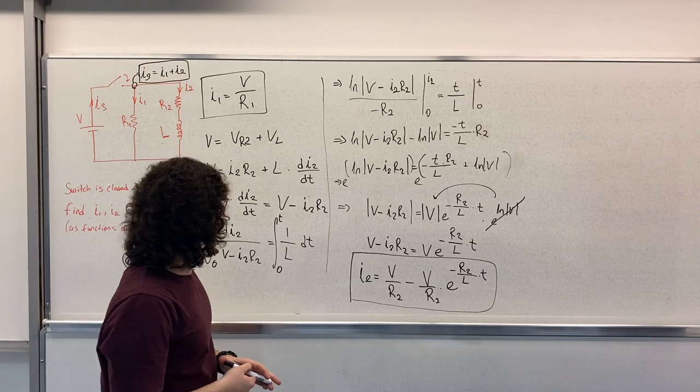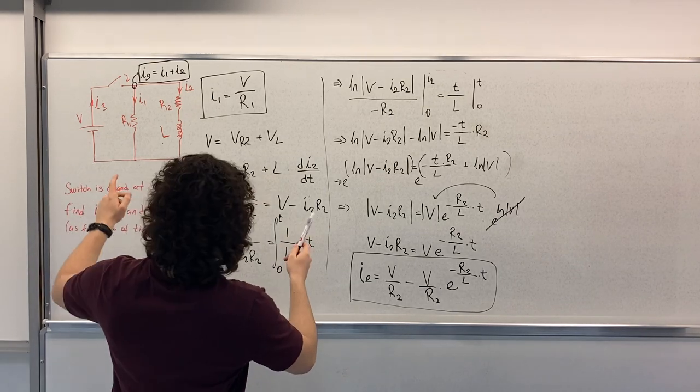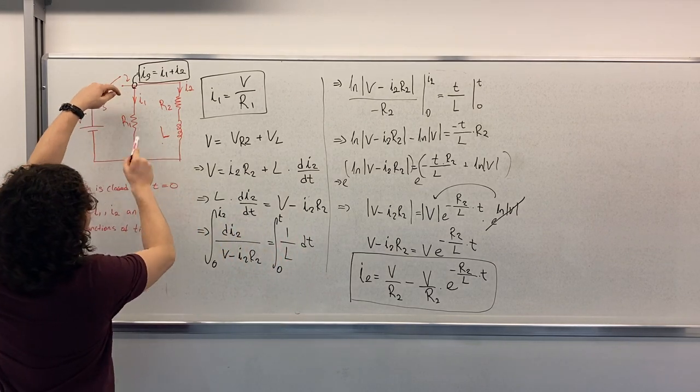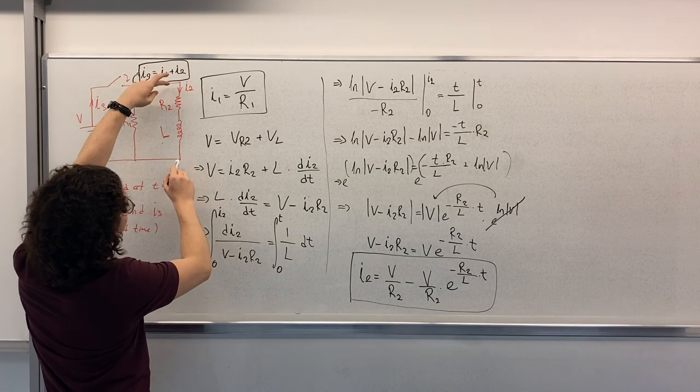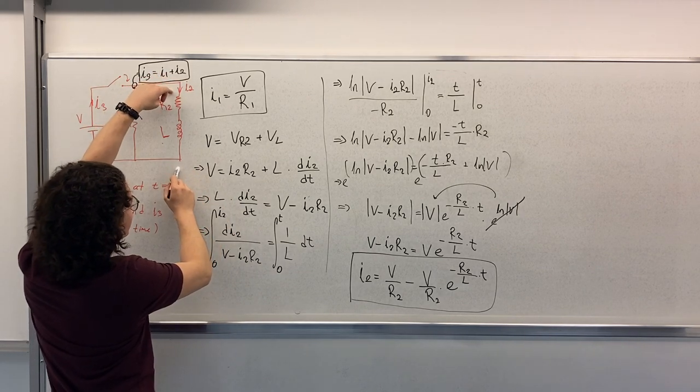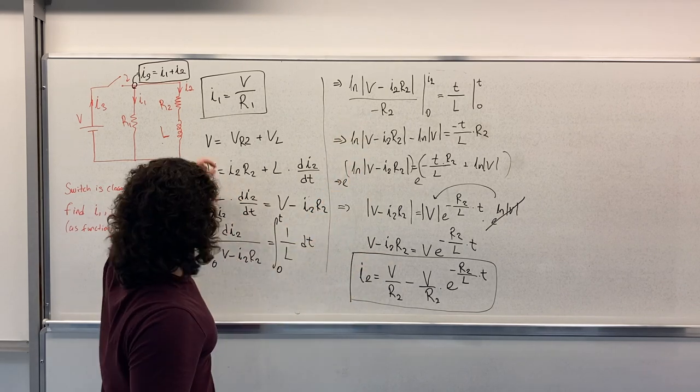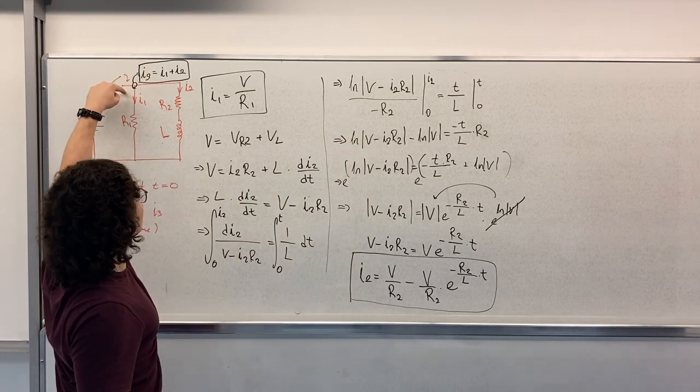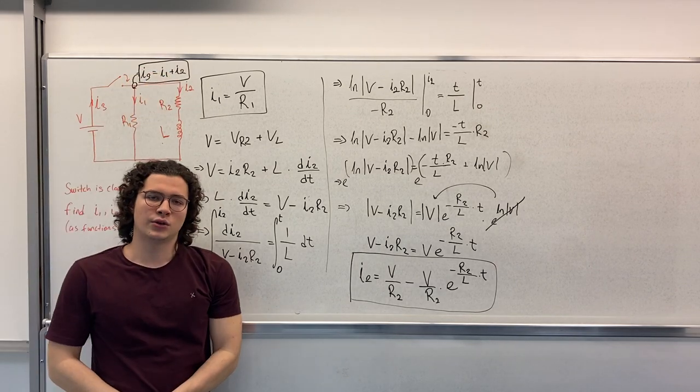So this is all for this question. Let me explain briefly again. I1 is found easily from here. In order to find I2 we have found a differential equation here. It's a separable equation. It's solved and I2 is here. And I3 is because of Kirchhoff's current law I1 plus I2. Thank you for listening.